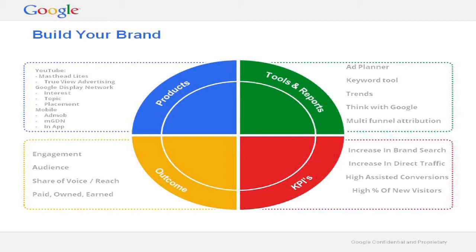Building your brand — within building your brand, there might be various objectives your client has tasked you with. If we look at our Google products, we tend to lead with a YouTube and Google Display Network focus when a client is actually looking to build their brand online, supported by search. Within YouTube, there are various ad formats. A very exciting YouTube product just launched in South Africa called YouTube Mastered Lights, which basically enables you to own the YouTube homepage for the day — you're guaranteed a certain amount of impressions, and that brand owns the homepage.